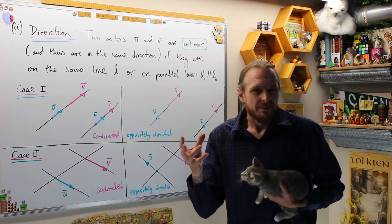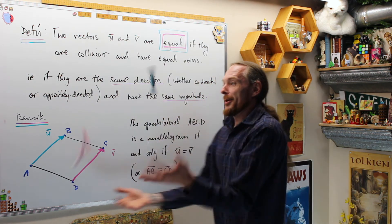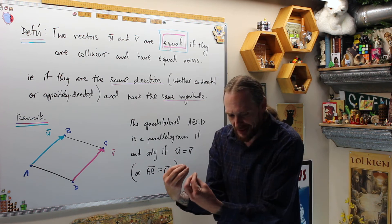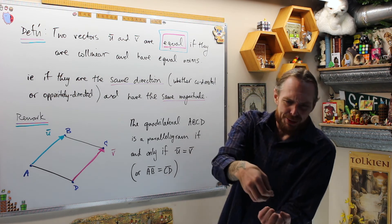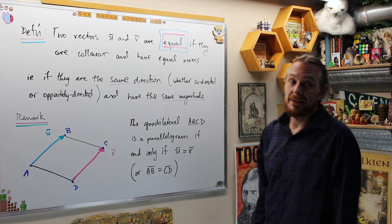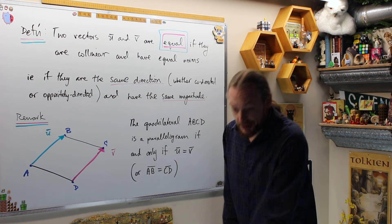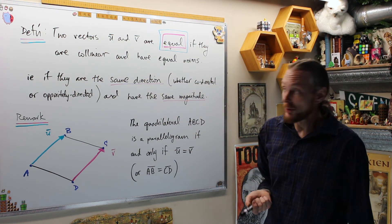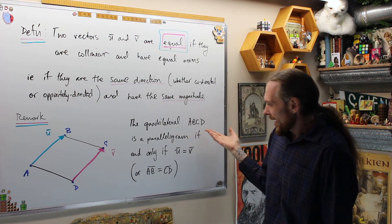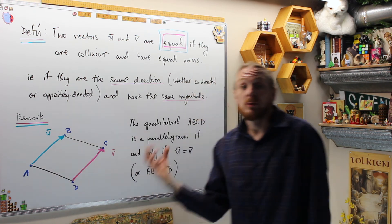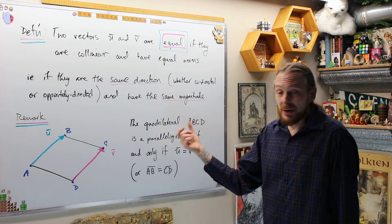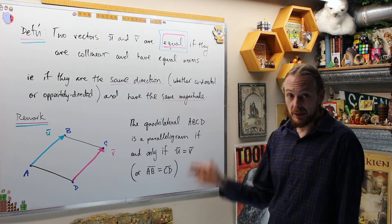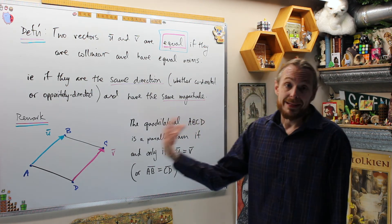Two vectors are equal if and only if they have the same direction and the same magnitude — they're collinear and have equal norms. An immediate remark: a quadrilateral ABCD in the plane is a parallelogram if and only if the diagonal vectors are equal. This gives us a good way to check equality and we'll use parallelogram laws to geometrically construct and do algebra with geometric vectors.